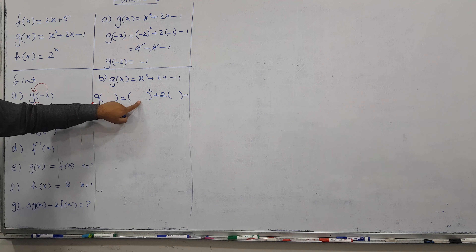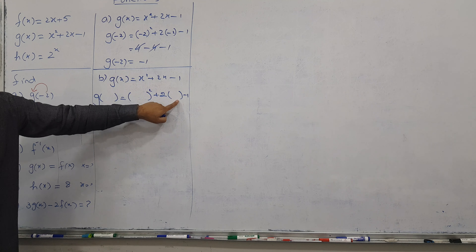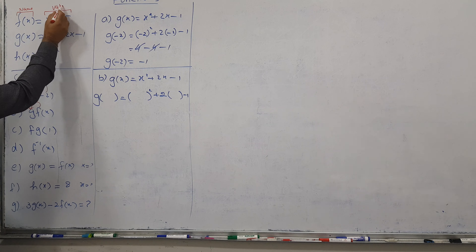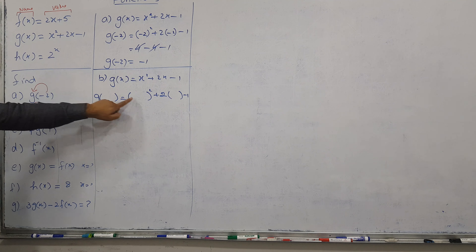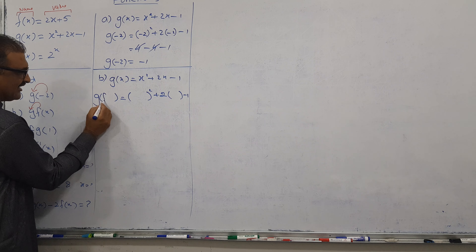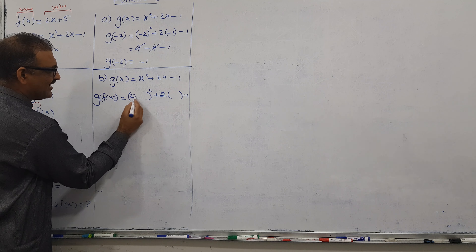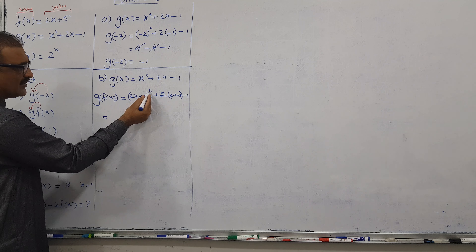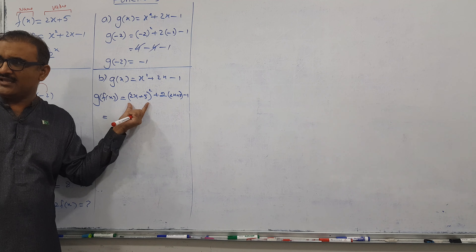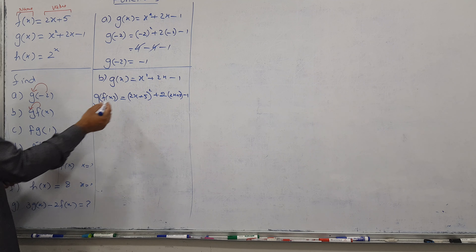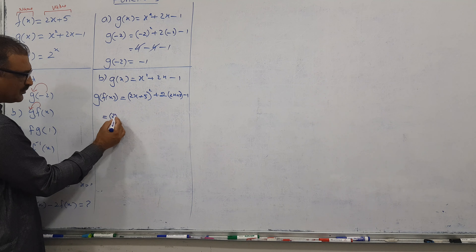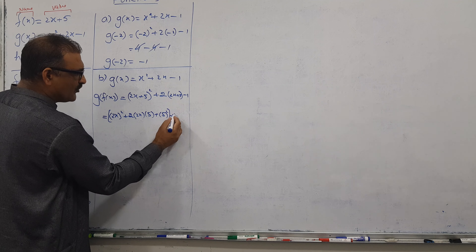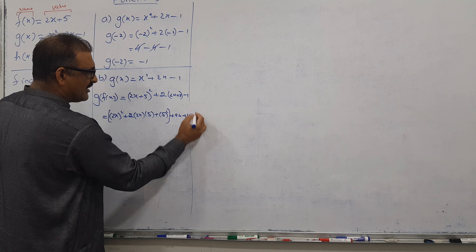The function name is F of X and the function value is 2X plus 5. Write the function name on the left and the function value on the right side. Now substitute 2X plus 5 into each empty space. We get a squared bracket, so we expand using the identity (A plus B) whole square: first term squared plus 2 times first times second plus second term squared. That gives 4X squared plus 20X plus 25, then 2 times 2X and minus 1.